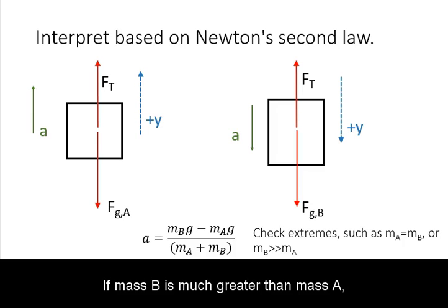If mass B is much greater than mass A, then the system will behave as if mass B is in freefall.